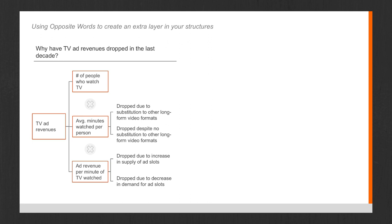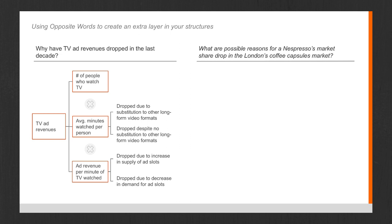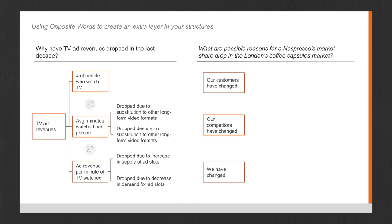Let me show you another example. What are possible reasons for Nespresso's market share drop in London's coffee capsules market? Using a conceptual framework, Nespresso's market share may have dropped because our customers have changed, our competitors have changed, or we have changed. Not very insightful — just a typical 3C structure — but we can make it better by adding an extra layer with opposite words.